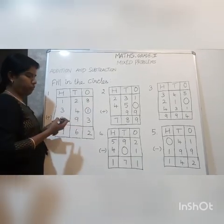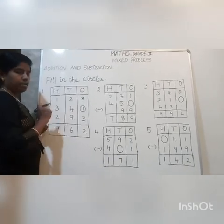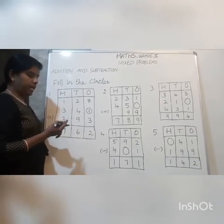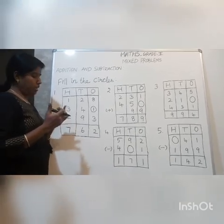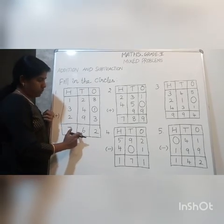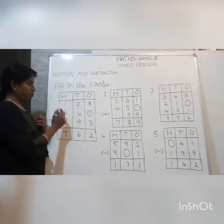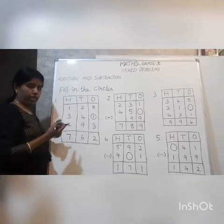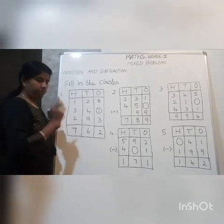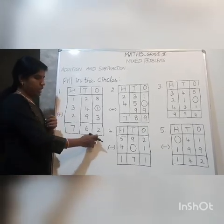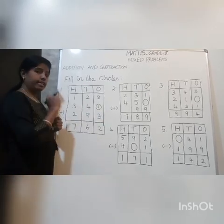Continuing: 7 plus 9 is 16 — we write 6 here and carry over 1. Then 1 plus 1 is 2, and 2 plus 3 is 5, and 5 plus 2 is 7. So we got the answer — it is correct. The number written in the circle is correct.